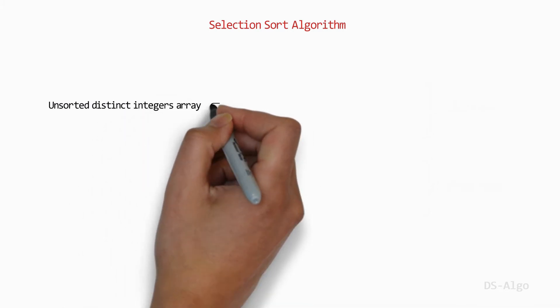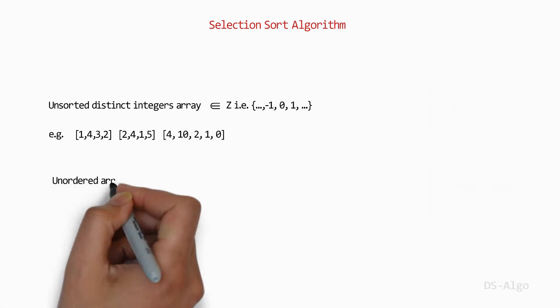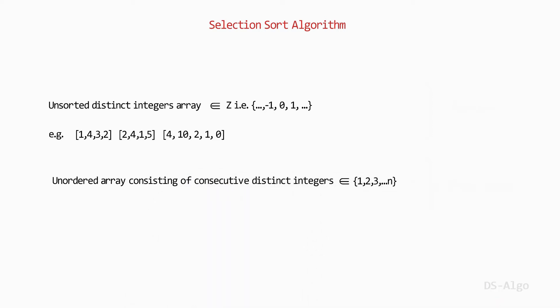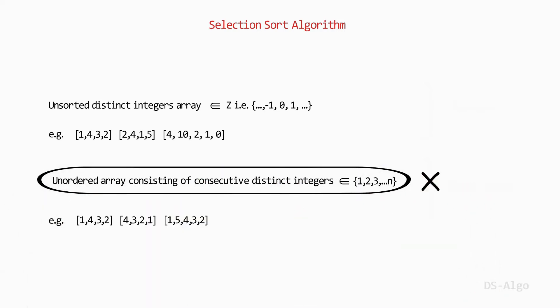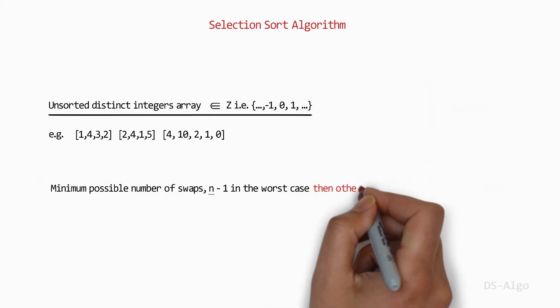This method is very simple and straightforward for an unsorted distinct integers array — for example, [1, 4, 3, 2] or [2, 4, 1, 5, 4, 10, 2, 1, 0]. However, for an unordered array consisting of consecutive distinct integers — for example, [1, 4, 3, 2] or [4, 3, 2, 1] — this method is not efficient. The important point is that we use Selection Sort to solve this problem because it makes the minimum possible number of swaps in the worst case, which is n minus 1 where n is the size of the array, compared to other sorting algorithms.